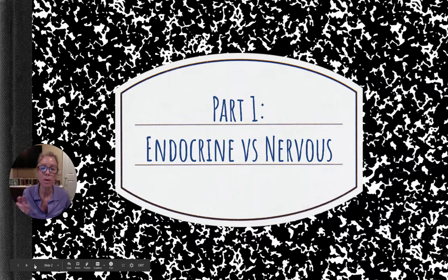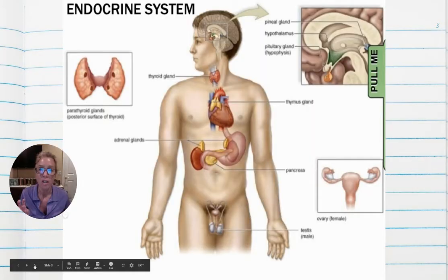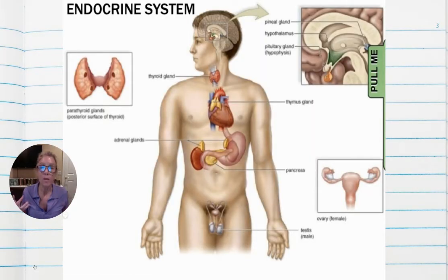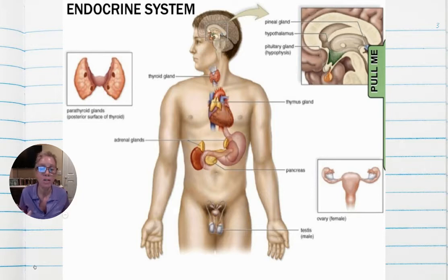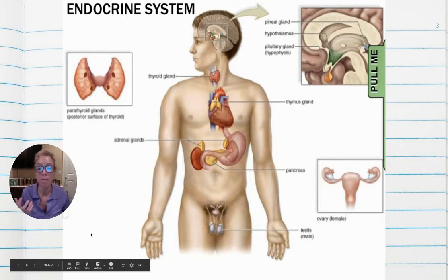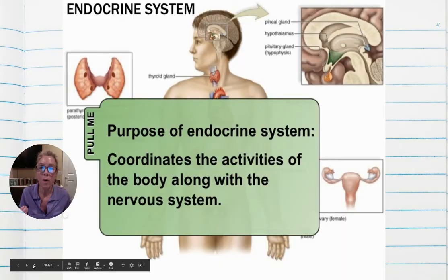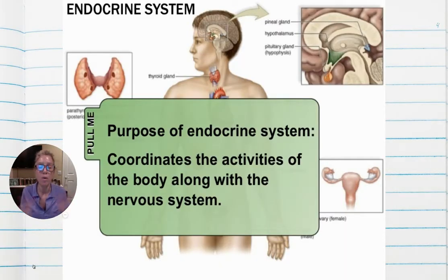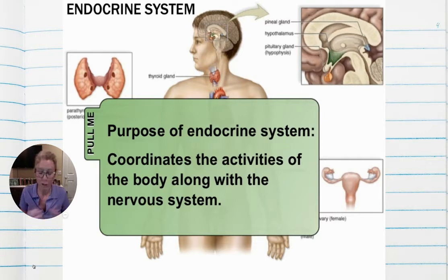Part one: we're going to compare and contrast the endocrine system with the nervous system. When you think about the endocrine system, sometimes we think of particular glands like the pancreas or the pituitary gland. But it also includes things like the heart and the stomach, because those organs also secrete hormones. The whole purpose of the endocrine system is to coordinate the activities of the body along with the nervous system.